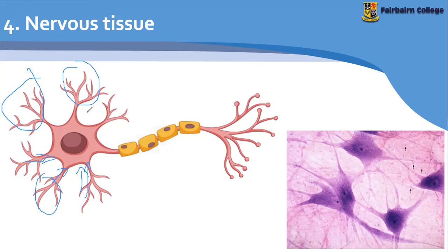So this is impulses traveling towards the cell body. Then the cell body makes a decision — this neuron is going to send the signal elsewhere again. It might send a signal to your muscle to lift your hand up, because otherwise that's going to cause a lot more pain. So the dendrites bring impulses towards the cell body; the axon takes impulses away.